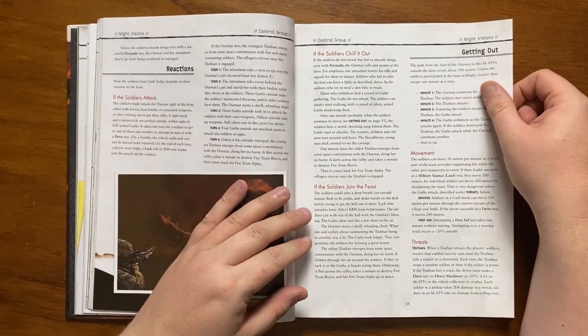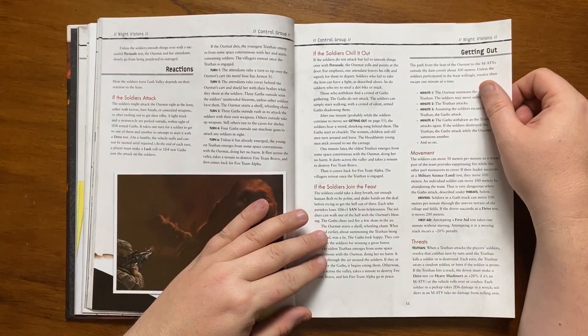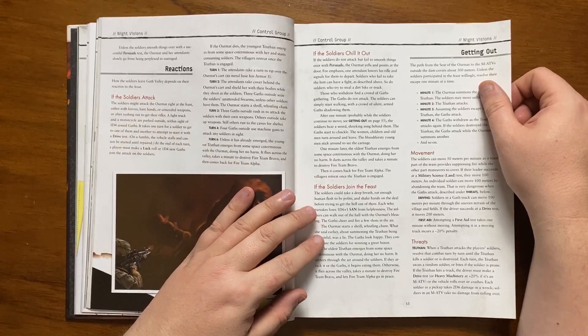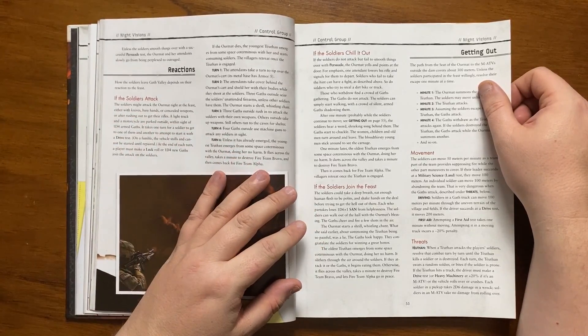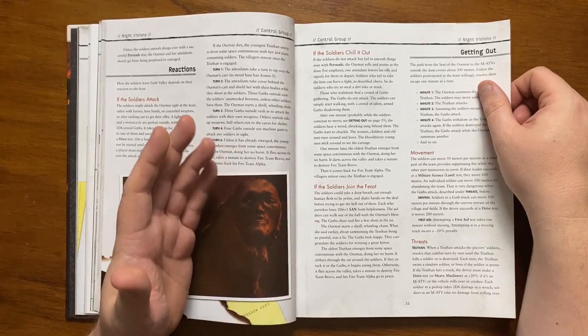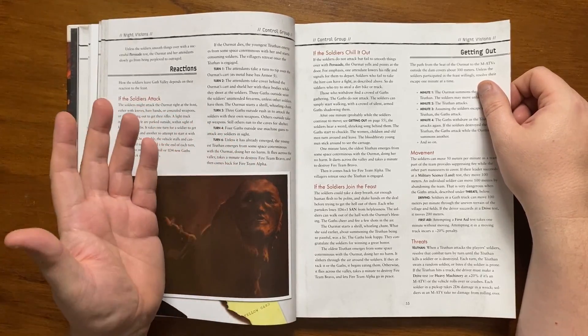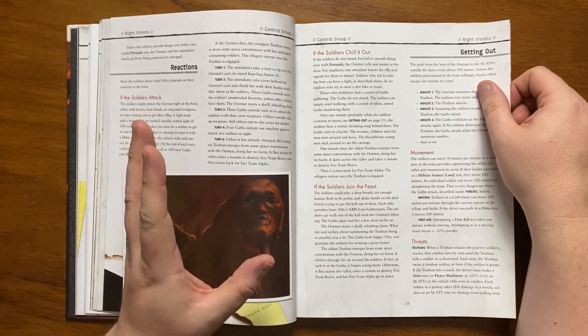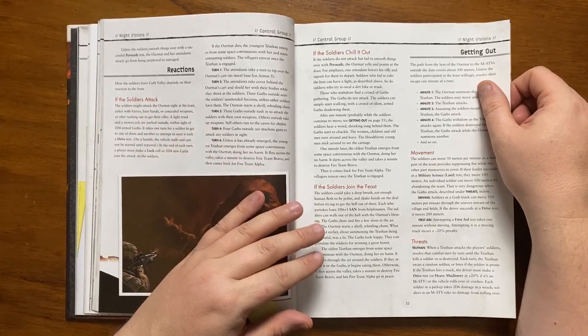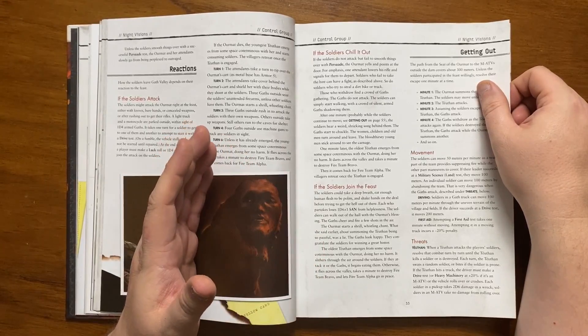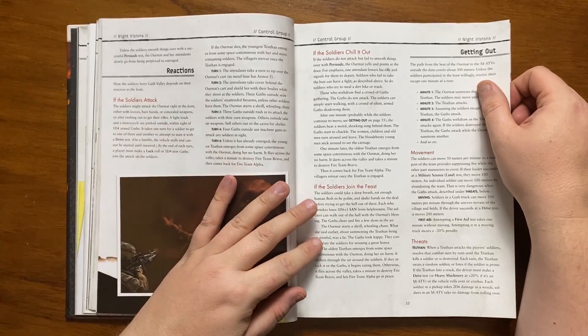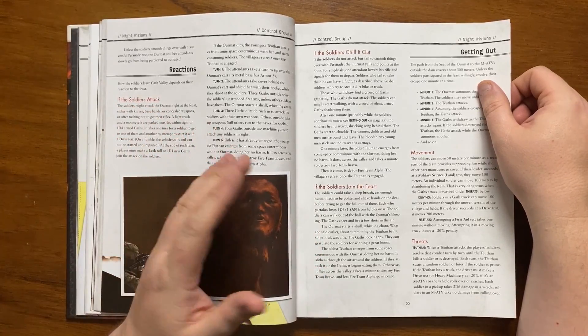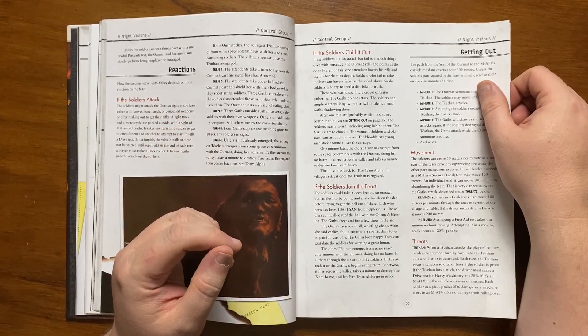If the soldiers are okay about things and to smooth things over the Ormat will indicate that they should leave. If they don't then it descends into a fight. When they leave they find a crowd of Gath who will walk silently alongside them. After around a minute a weird shrieking song can be heard and the Gath start chuckling and then leave with only the younger more bloodthirsty men hanging around to watch. A minute later the oldest Tuathan emerges and darts across the valley to destroy Bravo team eventually coming back for Alpha. If the soldiers join the feast it drains their sand and they can leave with the Ormat's blessing. As they leave the elders Tuathan emerges not harming the soldiers or the Gath and as before darts across the valley to destroy Bravo team. Alpha team is allowed to leave in peace unless they attack.